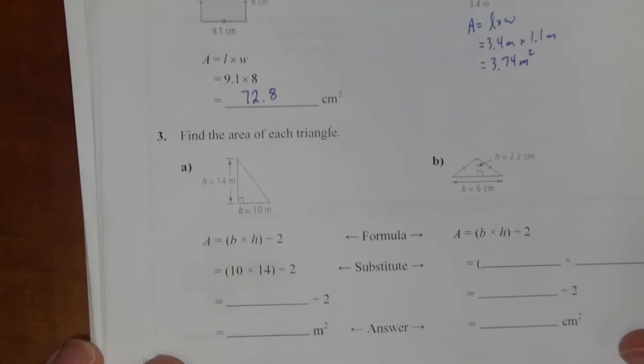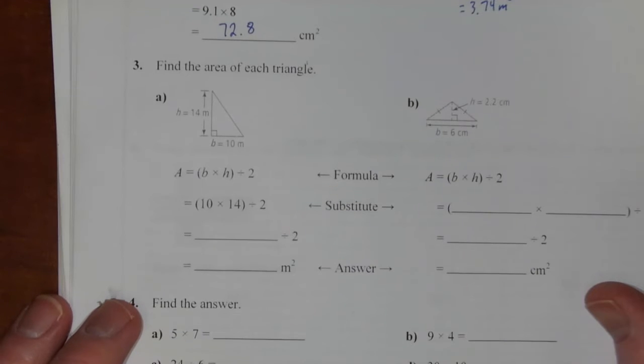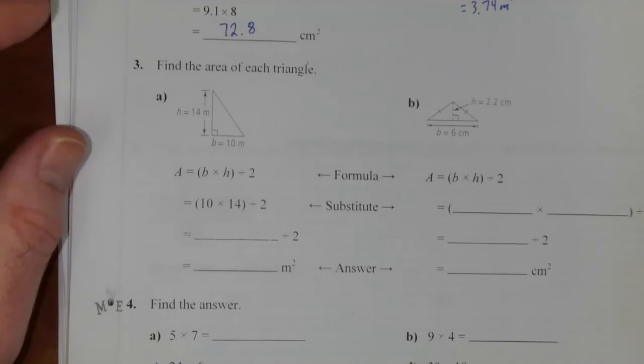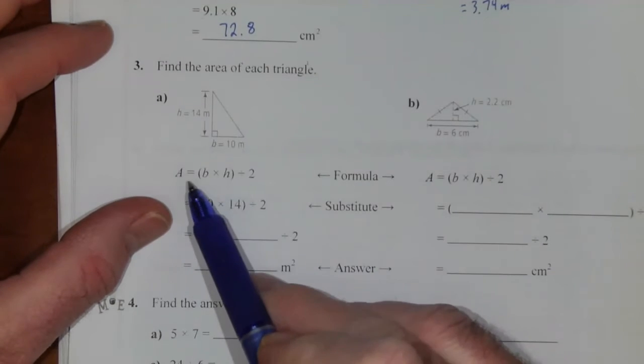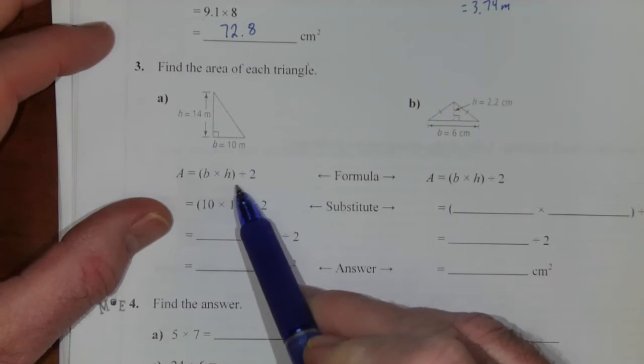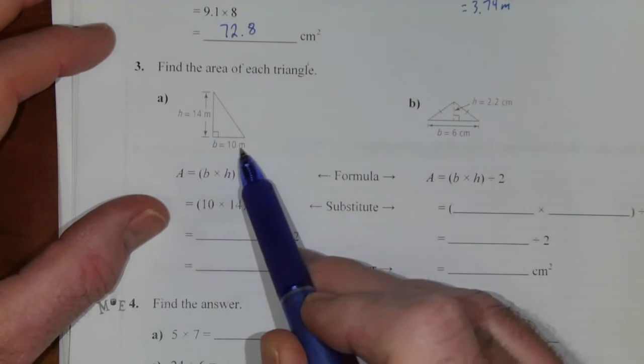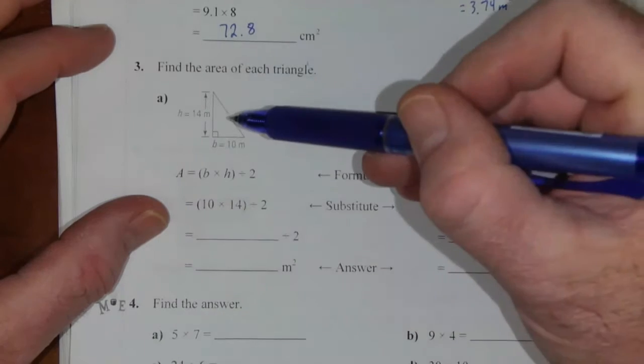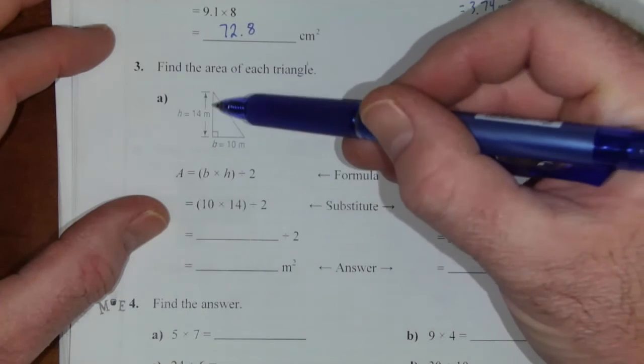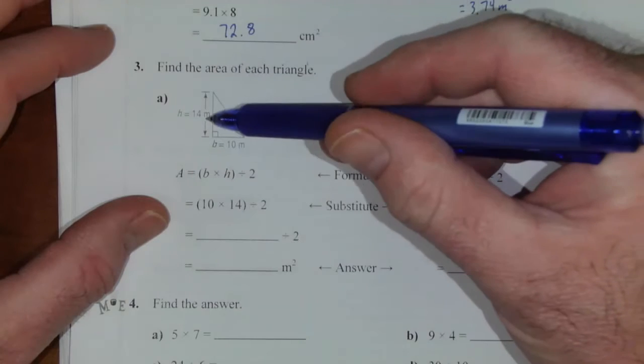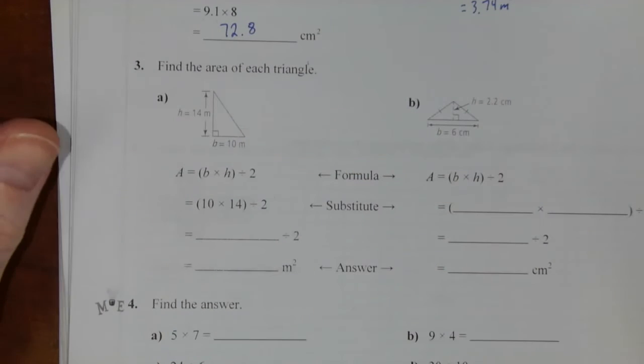Question number 3. Find the area of each triangle. So when we're doing area we should always start with a formula. And in this case the area of a triangle is base times height divided by 2. Based on this diagram we have a base of 10 meters and a height which is perpendicular to the base, so 90 degrees, of 14 meters. Multiply those numbers together and then divide by 2 to get your answer.